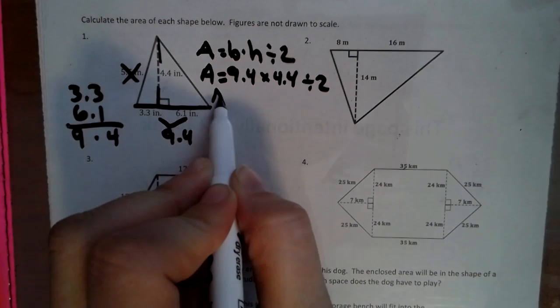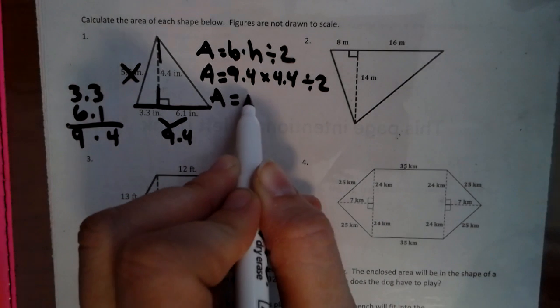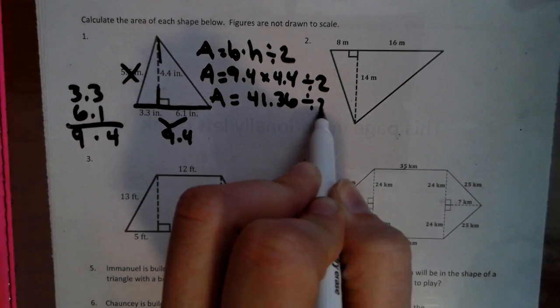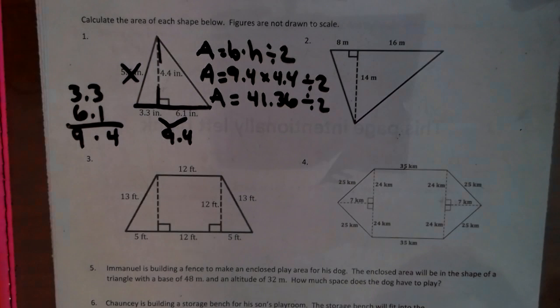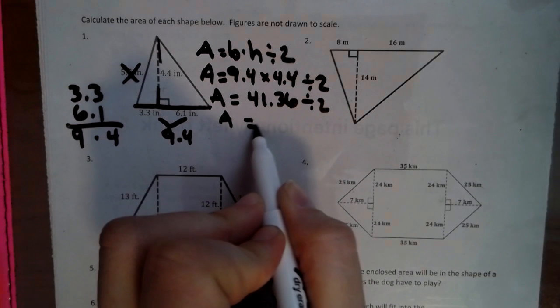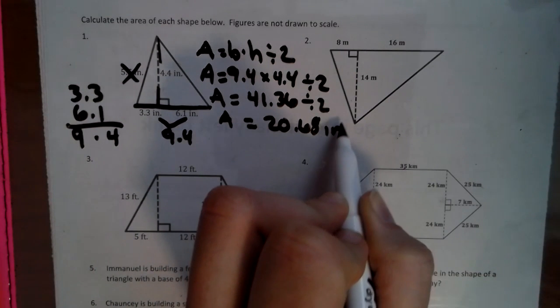So when we take this and we go 9.4 times 4.4, we're going to get 41.36, and we still have to cut that answer in half. So after we get that answer and we divide it by two, we have area equals 20.68 inches squared.